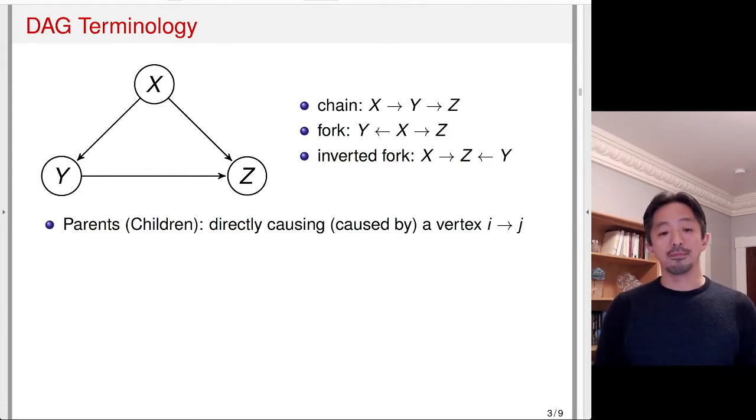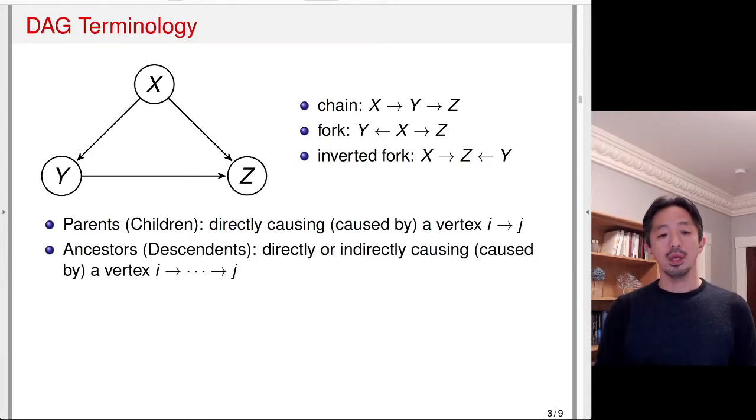We call parents if vertex i is directly causing j. So i is a parent of j, and j is a child of i. The parents and children refer to whether it's causing or being caused by some other variable. Similarly, we call ancestors or descendants, which is including directly or indirectly causing a particular vertex. So i is an ancestor of j because i eventually is affecting j. It may not be directly, but maybe there are a few steps. But i is causally affecting j, and j is being caused by i. So j is a descendant of i.